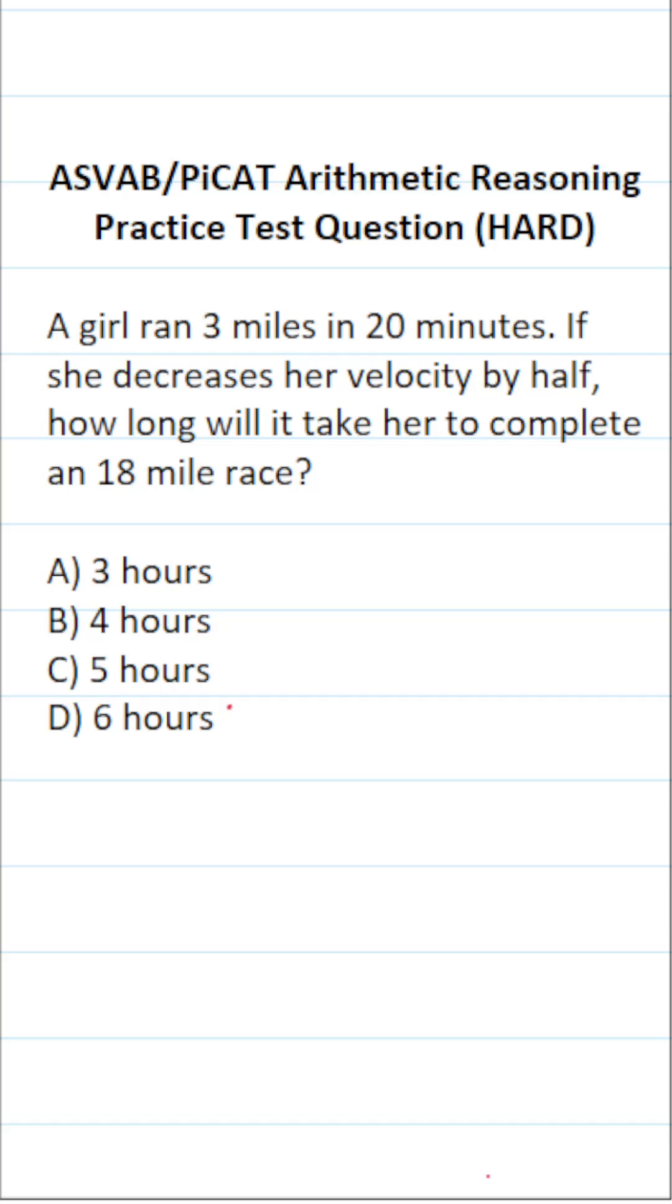This arithmetic reasoning practice test question for the ASVAB and PiCAT says: A girl ran 3 miles in 20 minutes. If she decreases her velocity by half, how long will it take her to complete an 18-mile race?